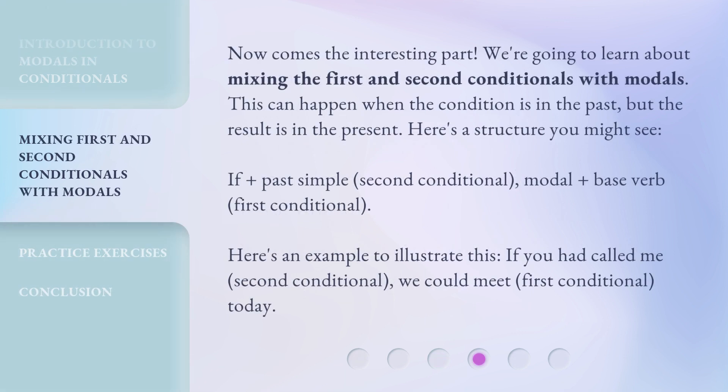Now comes the interesting part. We're going to learn about mixing the first and second conditionals with modals. This can happen when the condition is in the past, but the result is in the present. Here's a structure you might see: if plus past simple (second conditional), modal plus base verb (first conditional). Here's an example to illustrate this: If you had called me (second conditional), we could meet (first conditional) today.